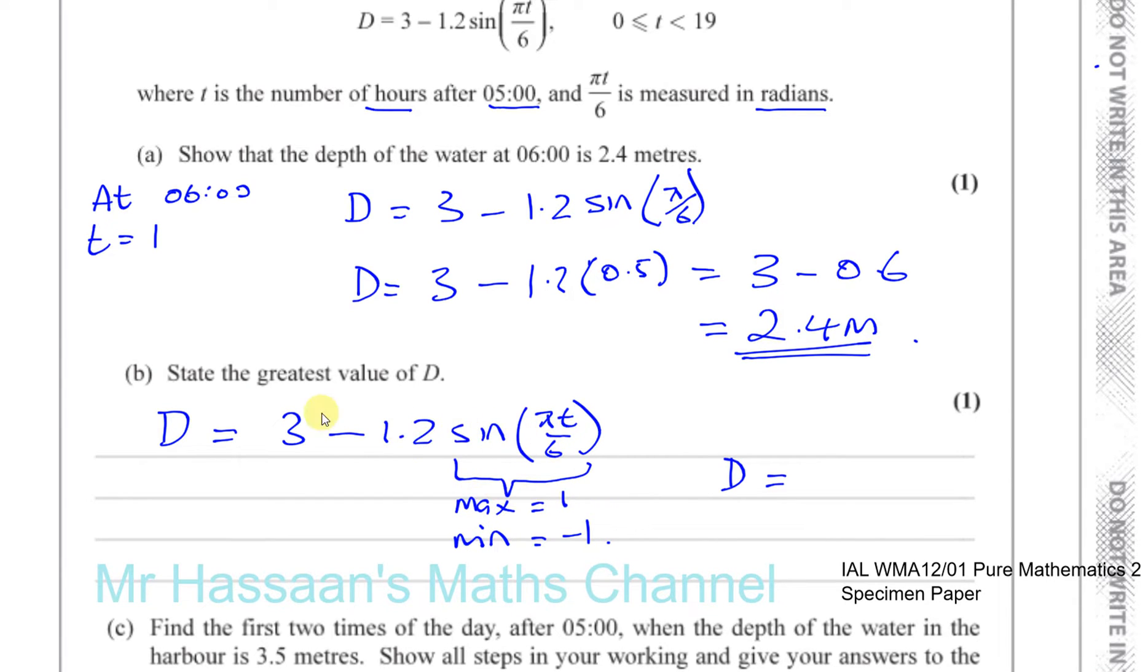So for example, if this was equal to 1, you'd have 3 minus 1.2 times 1, which gives you 1.8. Supposing this was minus 1, you'd have 3 minus 1.2 times minus 1, which would be 3 plus 1.2, which is 4.2. So that must be the biggest value of D, 4.2 meters.